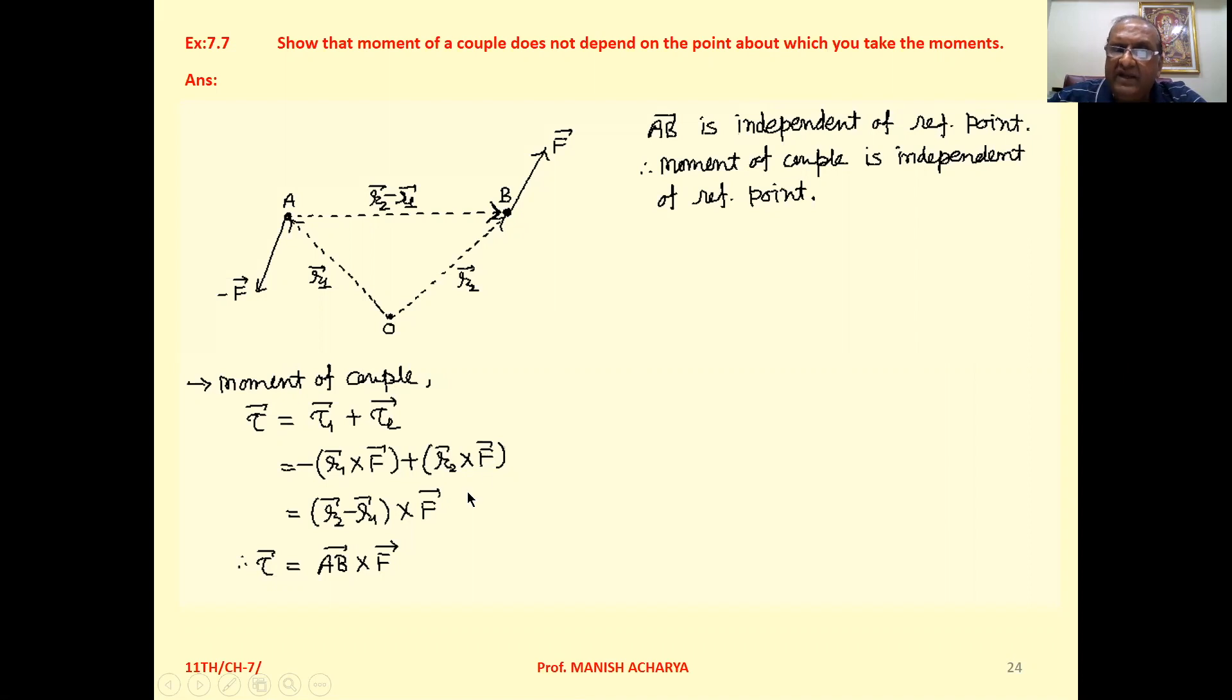R2 minus R1, that is nothing but the position of B with respect to A. Or simply we can say that is vector AB. So tau equal to vector AB cross F, but now see vector AB is independent of reference point.